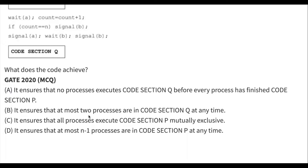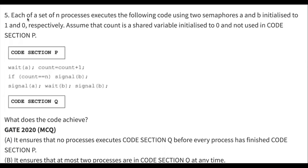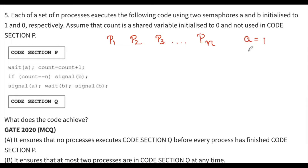Option A: it ensures that no process executes code section Q before every process has finished code section P. Let's check this. They have given N processes — P1, P2, P3, up to PN. Semaphore A is one and semaphore B is zero, so all processes can execute.